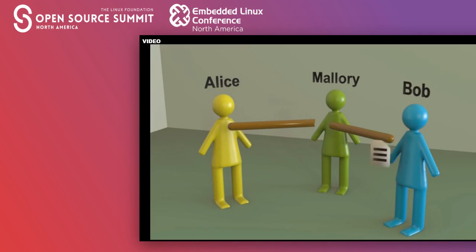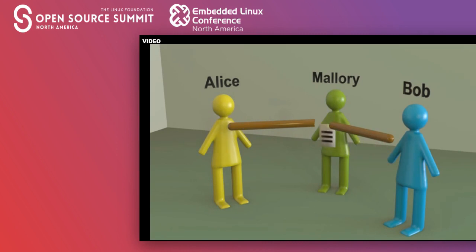I may think I am connecting to www.mybank.com, but I am in fact connecting to Mallory, who then makes a connection to my bank for me. Everything I send, he decrypts, observes, and then re-encrypts with the connection to the bank. Likewise, he will decrypt the data coming back from the bank and re-encrypt it for my browser, and I would be none the wiser. In watching, he both learns about my accounts, probably sees my login and password, and might even be able to modify the requests to redirect money to someone else.